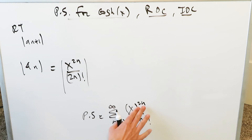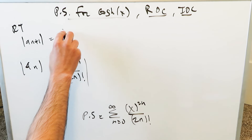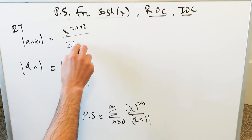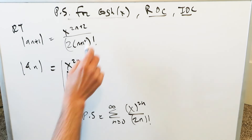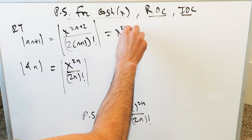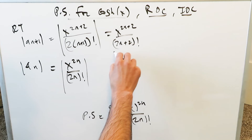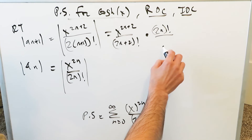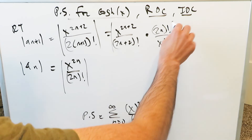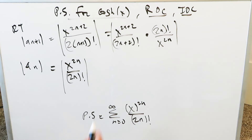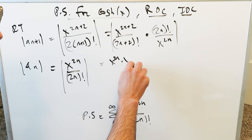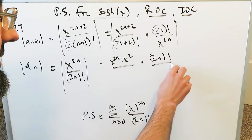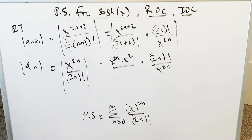The a_{n+1} term substitutes n+1 in place of n, giving x to the power of 2n+2 divided by (2n+2) factorial. We then compute the absolute value of a_{n+1} over a_n: x to the 2n+2 divided by (2n+2) factorial, multiplied by the reciprocal, (2n) factorial divided by x to the 2n. We separate algebraically: x to the 2n times x squared, using laws of exponents.